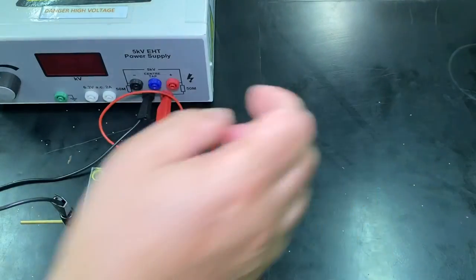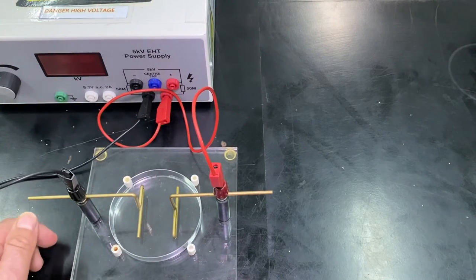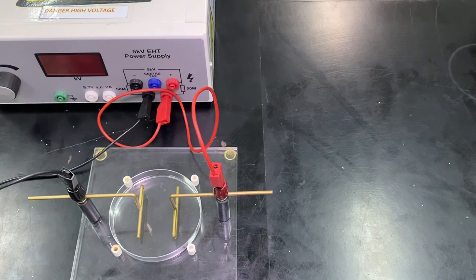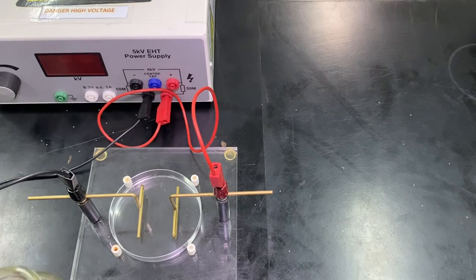Now, the electric field you get in two parallel plates should be uniform. It should be a uniform field. So, let's see what we get with this one.